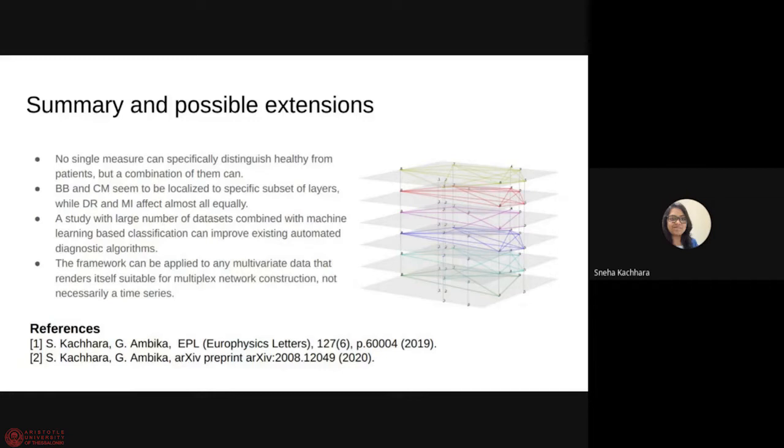If we have a larger number of data sets we would like to repeat the study and then we are also thinking of combining it with machine learning based classification scheme so that you have an improved classification and diagnosis algorithm which is informed by the features of dynamics as apparent in the ECG. So it is not a blind classification so to speak and this framework is very general, it is not limited to time series data. Any data which has a sort of correspondence between different variables can be converted to a multiplex network and then the similar characterization can be applied. The details of this work can be found in the references and I welcome any questions or comments. Thank you so much.